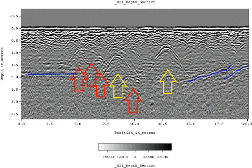GPR is used in law enforcement for locating clandestine graves and buried evidence. Military uses include detection of mines, unexploded ordnance, and tunnels.